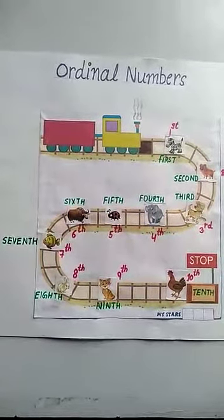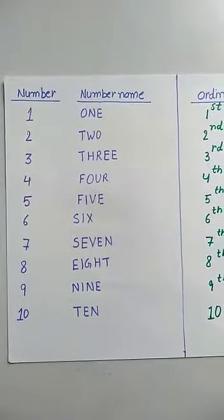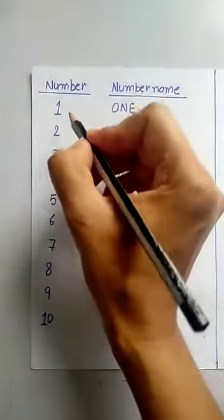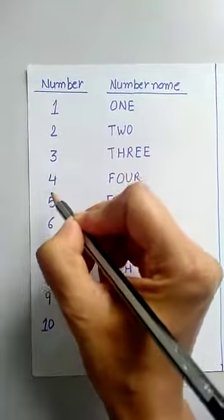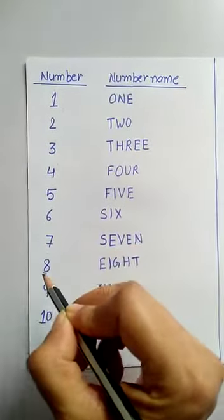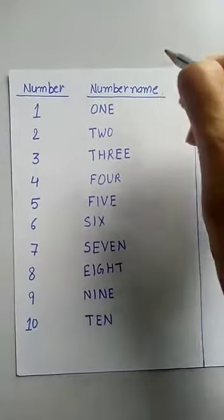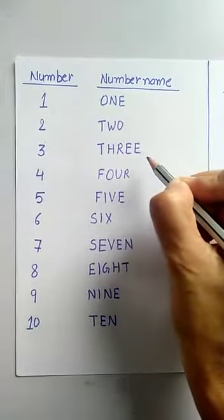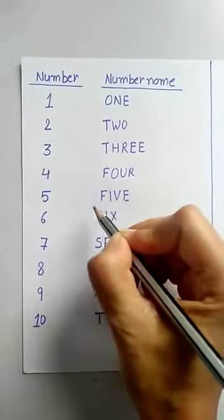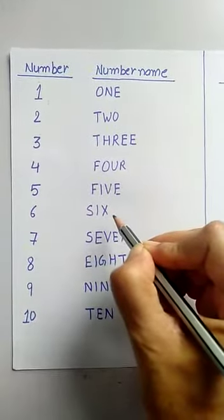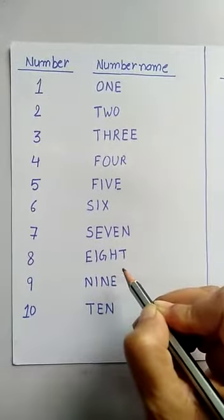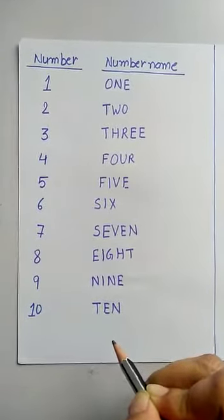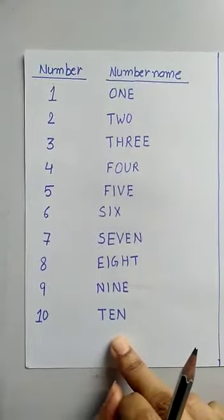So let's start with number 1. You already know the number and number names like number 1, 2, 3, 4, 5, 6, 7, 8, 9 and 10. And number names O-N-E-1, T-W-O-2, T-H-R-E-E-3, F-O-U-R-4, F-I-V-E-5, S-I-X-6, S-E-V-E-N-7, E-I-G-H-T-8, N-I-N-E-9, T-E-N-10. These are also known as cardinal numbers.